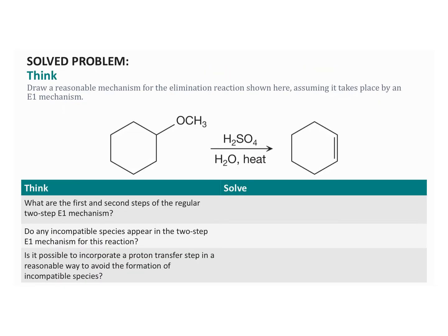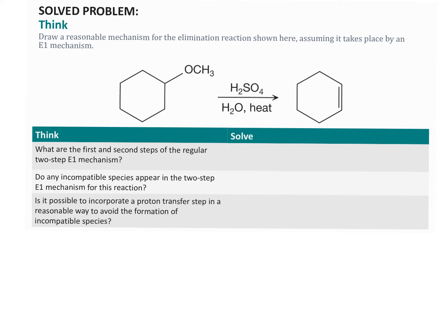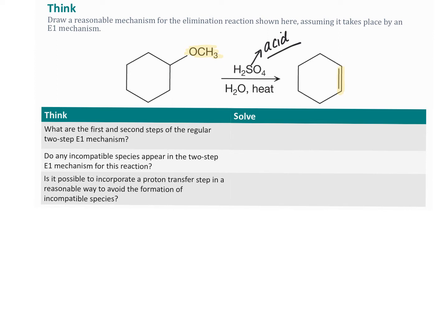Let's draw a reasonable mechanism for an elimination reaction assuming an E1 mechanism with H2SO4 present. H2SO4 is an acid, so this is under acidic conditions — we should not form any bases. In the regular two-step E1 mechanism, the first thing that happens is that the leaving group pops off to form a carbocation.